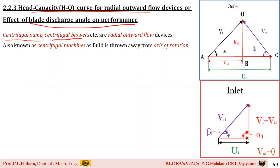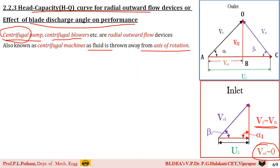In radial outward flow devices, the fluid enters radially at the inlet. If you observe the inlet velocity triangle, you can see the fluid is entering radially, which means VU1 equals zero, and the absolute velocity at the inlet equals the flow velocity at inlet: V1 = VF1. So the inlet velocity triangle takes the shape of a right-angle triangle. These devices are generally applied for centrifugal pumps and centrifugal blowers, where centrifugal means the fluid is thrown away from the axis of rotation. Therefore, centrifugal machines are known as radial outward flow devices.